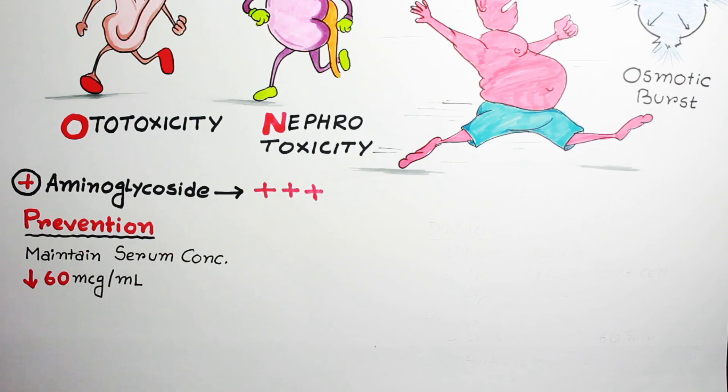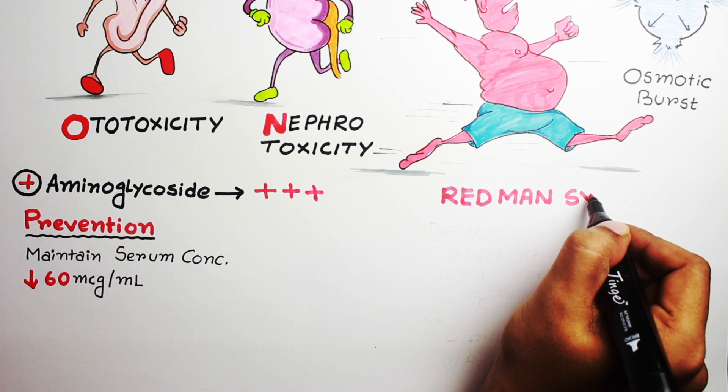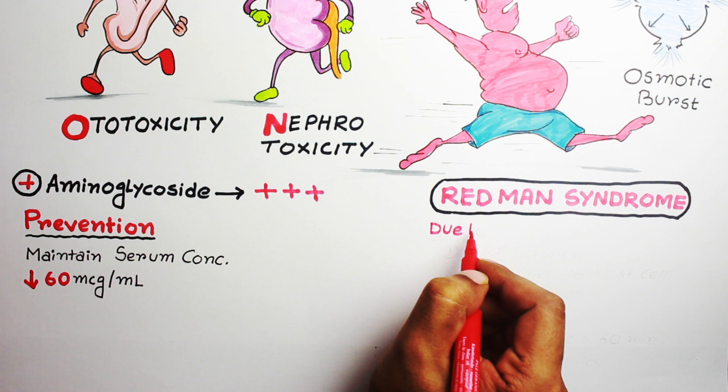Next is a very important effect. If you give vancomycin infusion very fast, it can cause generalized flushing or redness of skin. It is due to non-specific mast cell degranulation. This situation is called red man syndrome. It is very important for your board exam.